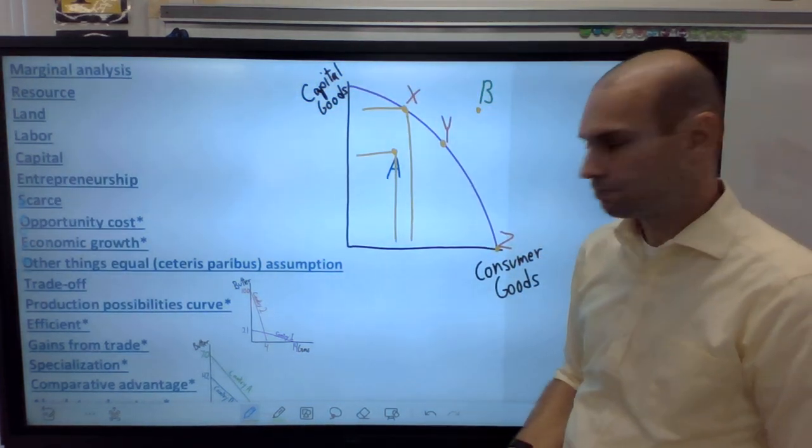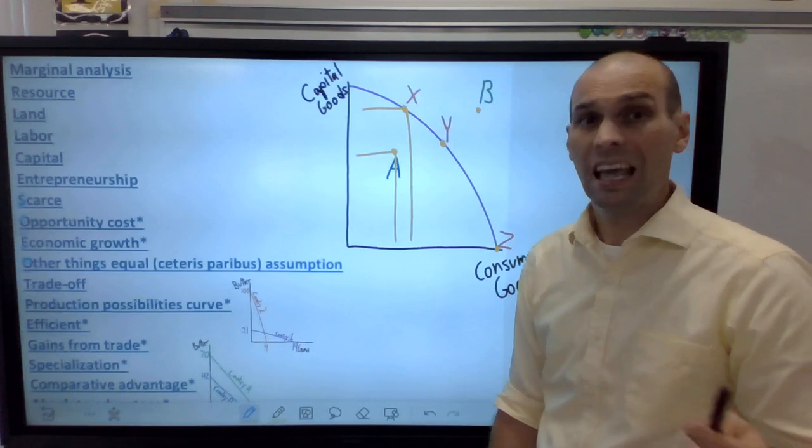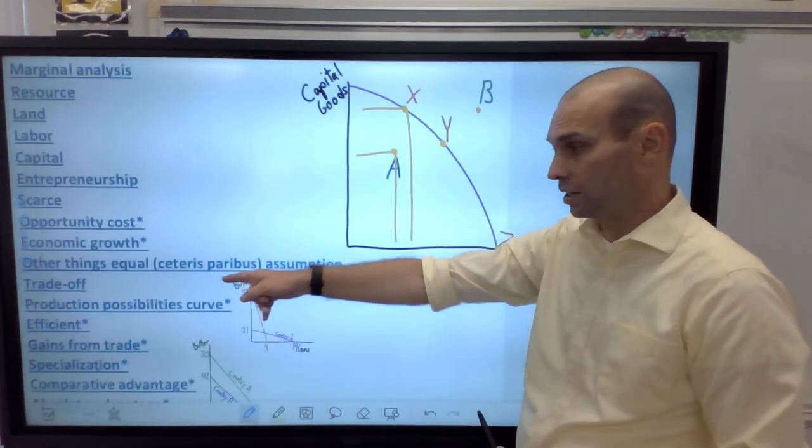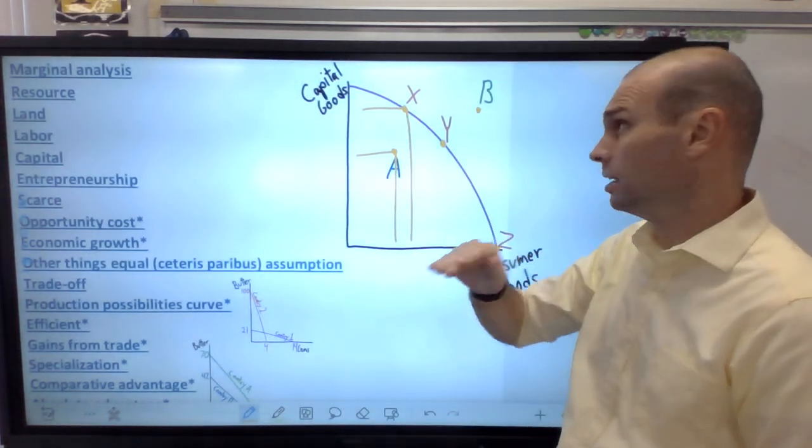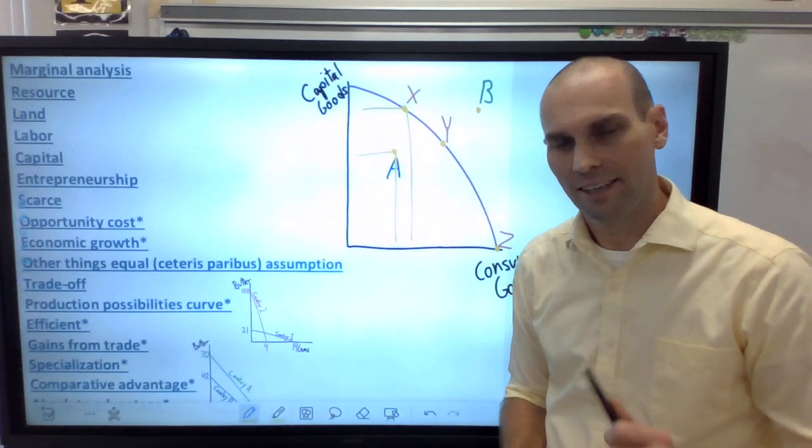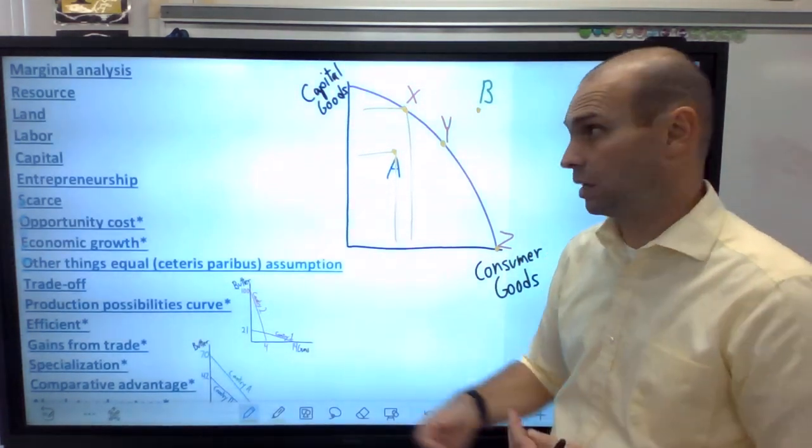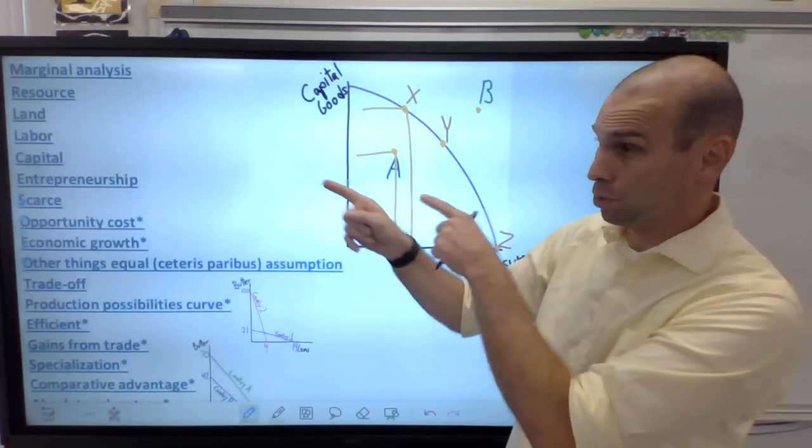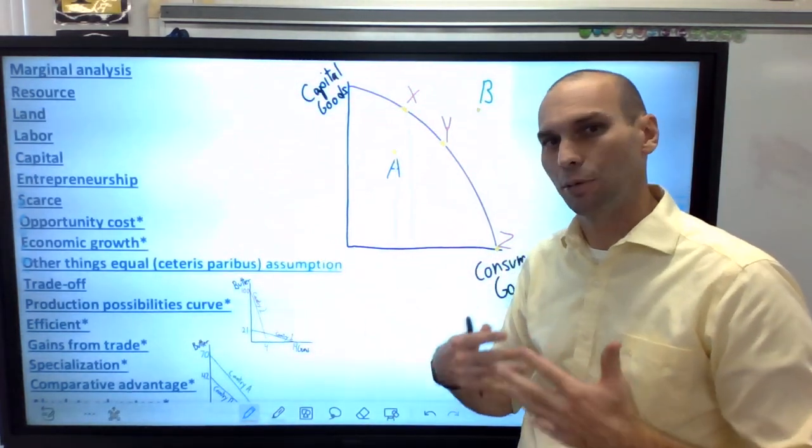So this is what we call inefficient, where X, Y, and Z, anything on the curve is efficient. You might say Z, no, get no capital goods, it's inefficient. Actually, it is because it's on the curve. Let's say we're just in a function right now of all we want is consumer goods. Well, then Z is fine. That's something we'll call normative analysis, but positive analysis is measurable. That would be perfectly efficient on the curve. And lastly, we have point B there. Point B is outside of the curve. Anything outside the curve is considered impossible because if we are at our production possibilities curve, what is possible is what's on the curve or inside it.